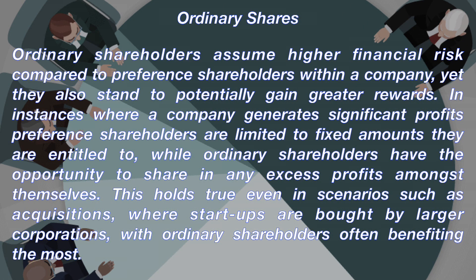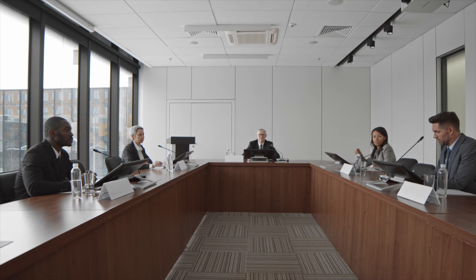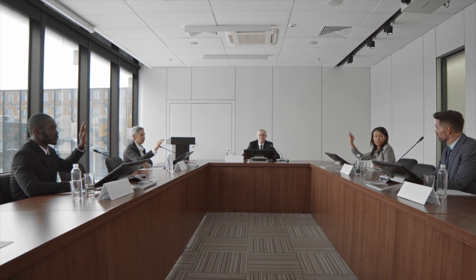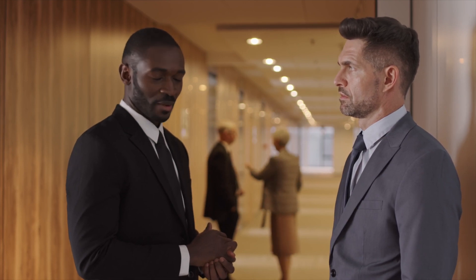Ordinary shareholders assume higher financial risk compared to preference shareholders within a company, yet they also stand to potentially gain greater rewards. In instances where a company generates significant profits, preference shareholders are limited to fixed amounts they are entitled to through dividends, while ordinary shareholders have the opportunity to share in any excess profits amongst themselves. This holds true even in scenarios such as acquisitions where startups are bought by larger corporations, with ordinary shareholders often benefiting the most. In addition to their entitlement to residual profits, shareholders have the right to vote for the company's board members and to receive and approve the annual financial statements. While some preference shareholders may also hold voting rights depending on the rights in the constitution, this privilege is more commonly associated with ordinary shareholders.